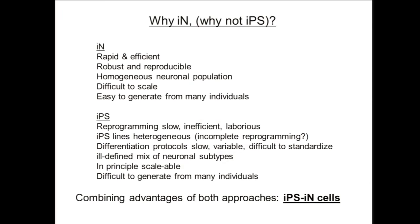To provide food for discussion: what's the real benefit compared to making neurons via iPS cells? iN cell formation is very fast and, at least in mouse, very efficient — much more efficient than iPS cell formation. It's a much simpler technical approach. Once established, the method is very robust and reproducible, working across many different mouse genetic backgrounds as well as human fibroblast populations.